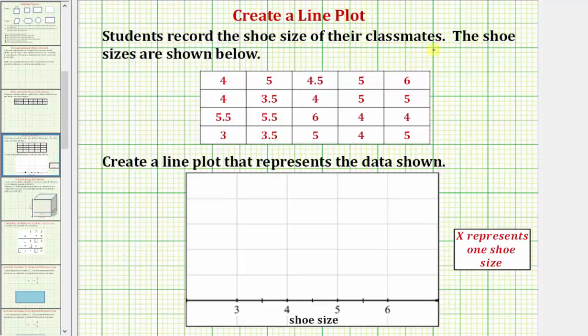Students record the shoe size of their classmates. The shoe sizes are shown below on the table. Notice how we have four rows of five, so we have a total of twenty shoe sizes. We're asked to create a line plot that represents the data shown.